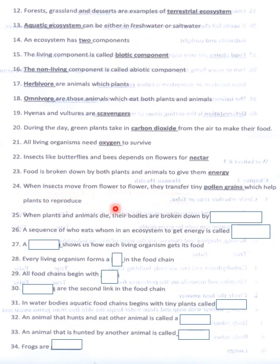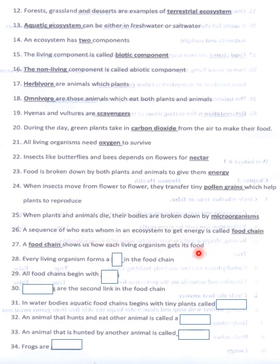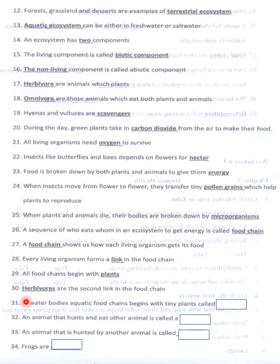When insects move from flower to flower, they transfer tiny pollen grains. When plants and animals die, their bodies are broken down by microorganisms. A sequence of who eats whom in the ecosystem to get energy is called a food chain. Every living organism forms a link in the food chain. All food chains begin with plants. Herbivores are the second link of the food chain.